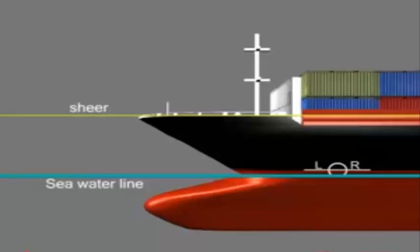The plimsoll line allows one to know the freeboard. Freeboard is the vertical distance between the water line and the sheer of the ship where water can enter the vessel.